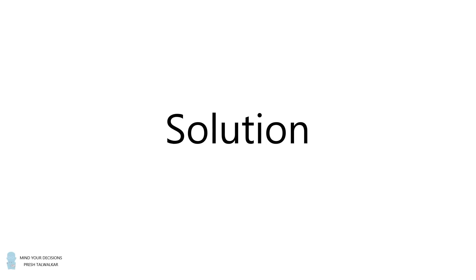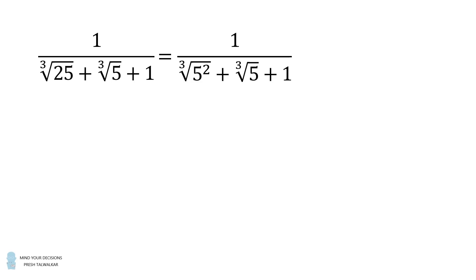Now, let's solve the problem. 1 divided by the cube root of 25 plus the cube root of 5 plus 1 is equal to 1 divided by the cube root of 5 squared plus the cube root of 5 plus 1. Let x equal the cube root of 5. The denominator then becomes x squared plus x plus 1.